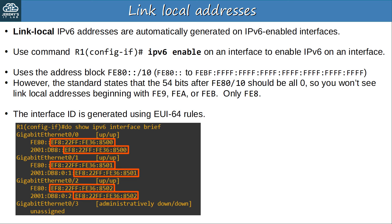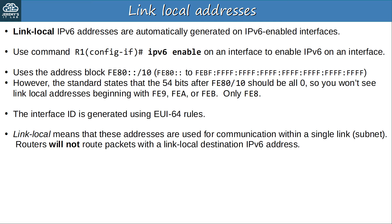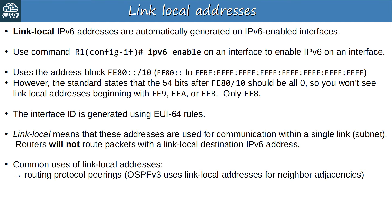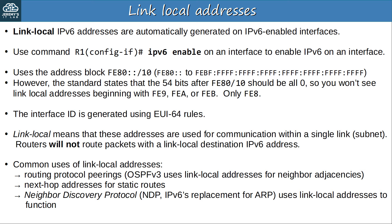Looking at SHOW IPv6 interface brief, each link-local address uses the same interface ID as the global unicast address we configured, because both used EUI-64 to generate the interface ID. Link-local means these addresses are used for communication within a single link — a single subnet. Routers will not route packets with a link-local destination IPv6 address. Uses for link-local addresses include routing protocol peerings — OSPFv3 uses link-local addresses for neighbor adjacencies and sending LSAs — as next-hop addresses for static routes, and for Neighbor Discovery Protocol (NDP), IPv6's replacement for ARP.